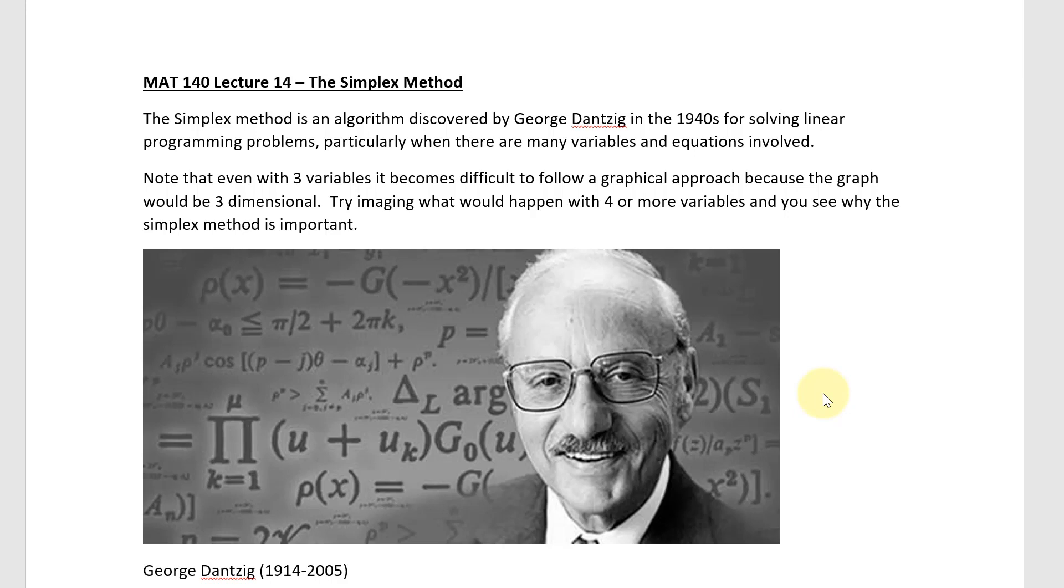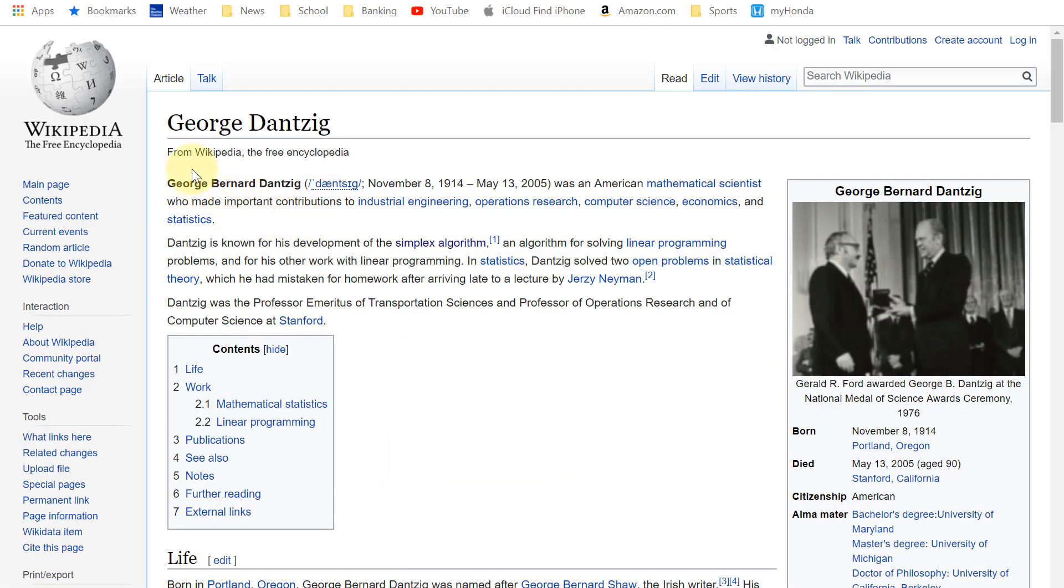The ones that we did on the last assignment only had two variables, and it wasn't very realistic. To make them more realistic, we need more variables and more equations. Then it becomes just impossible to do graphically. We need another method. We could still do by hand, although nowadays, of course, a computer is perfect for this sort of thing. So I will get to that, but I've got to tell the story about George Danzig. It's really a fantastic story. If you look him up on Google, go to the Wikipedia page, see George Bernard Danzig from 1914 to 2005.